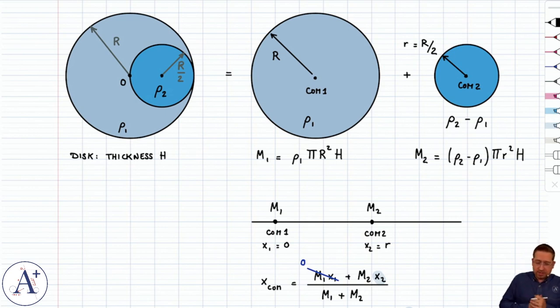But nonetheless, the principle is that you restore the symmetry by considering two disks, you're just careful to assign the right mass density to one of the two, so that when you layer them on top of each other, you get the same mass density that you started out with here, rho2, for the insert.